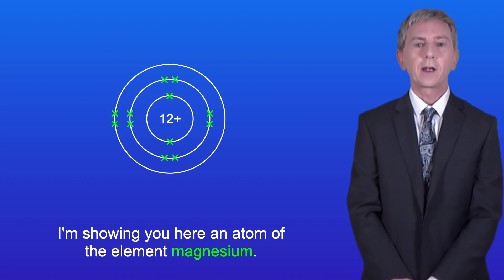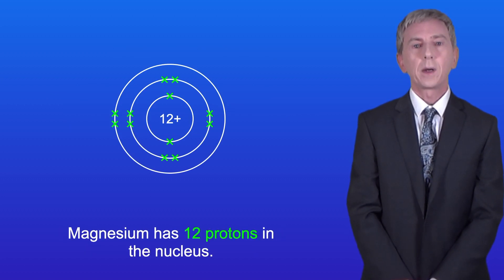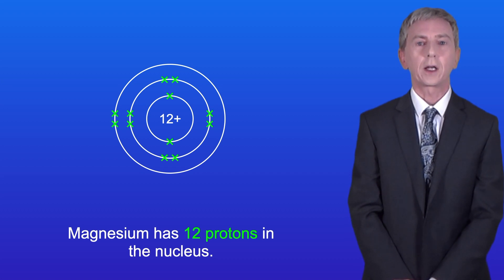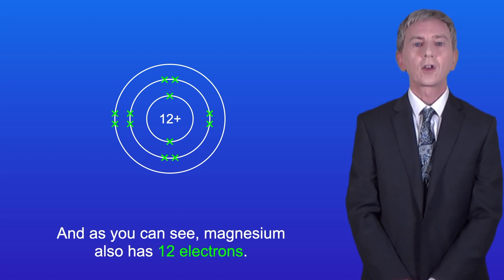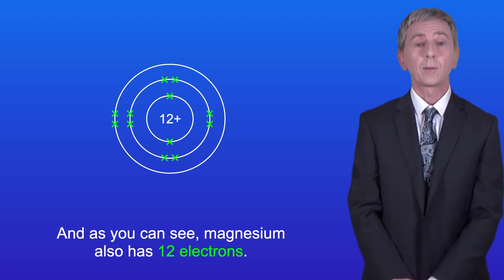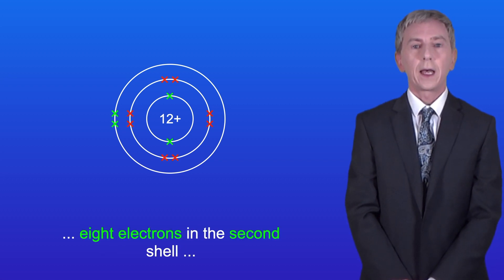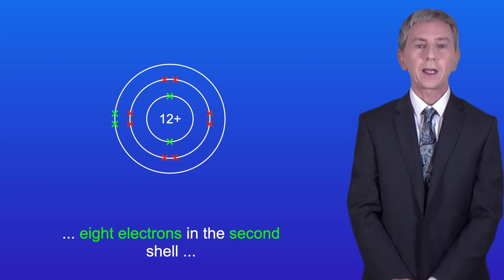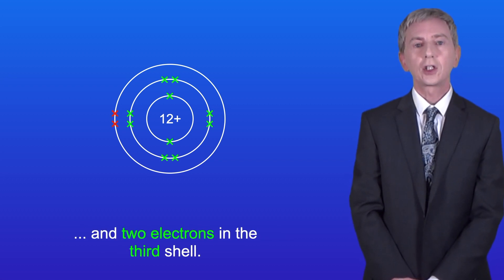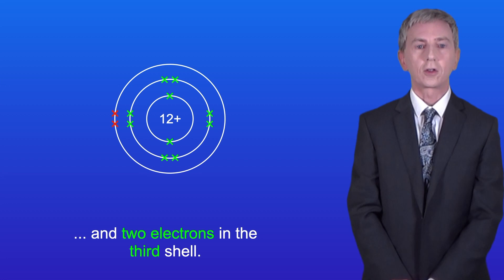I'm showing you here an atom of the element magnesium. Magnesium has 12 protons in the nucleus, and as you can see magnesium also has 12 electrons. There are two electrons in the first shell, eight electrons in the second shell, and two electrons in the third shell.